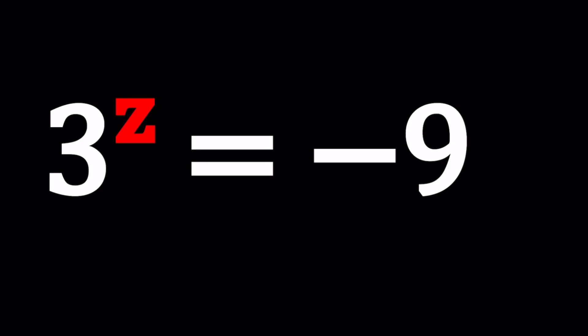Hello everyone, welcome to A plus B I. This channel is all about complex numbers, and in this video we're going to be solving a very complex problem. We have 3 to the power of z equals negative 9, and we're going to be solving for z values.